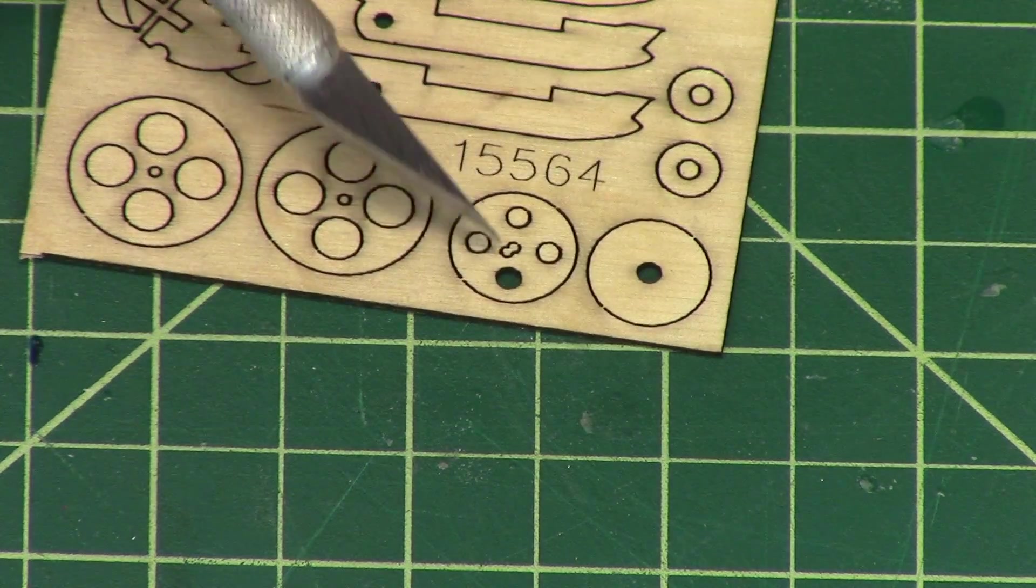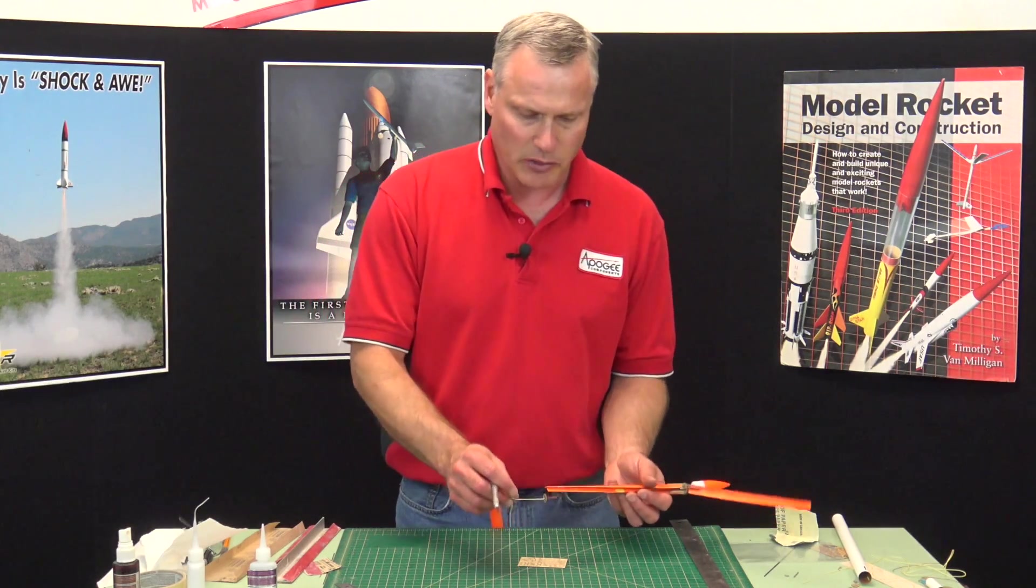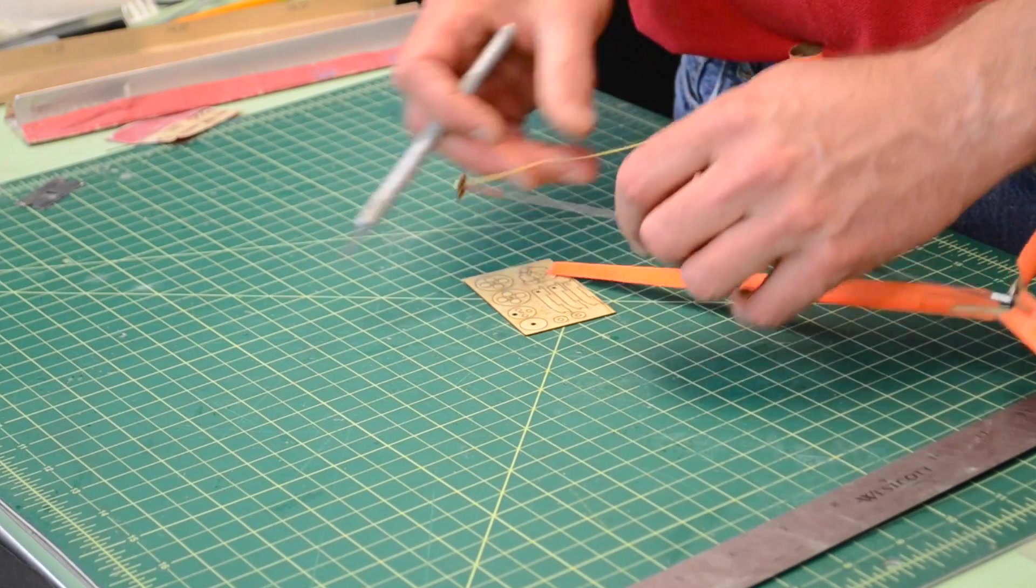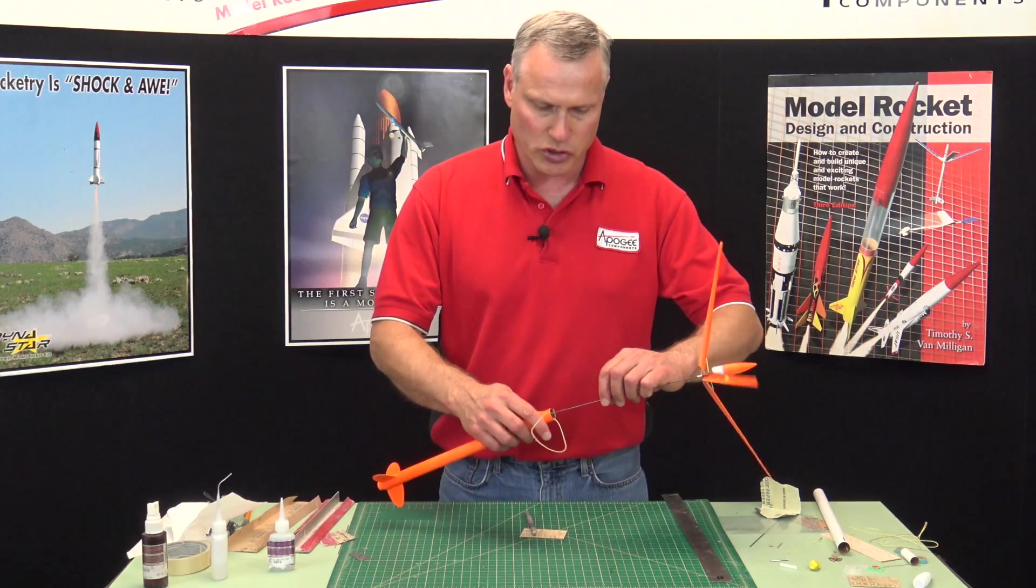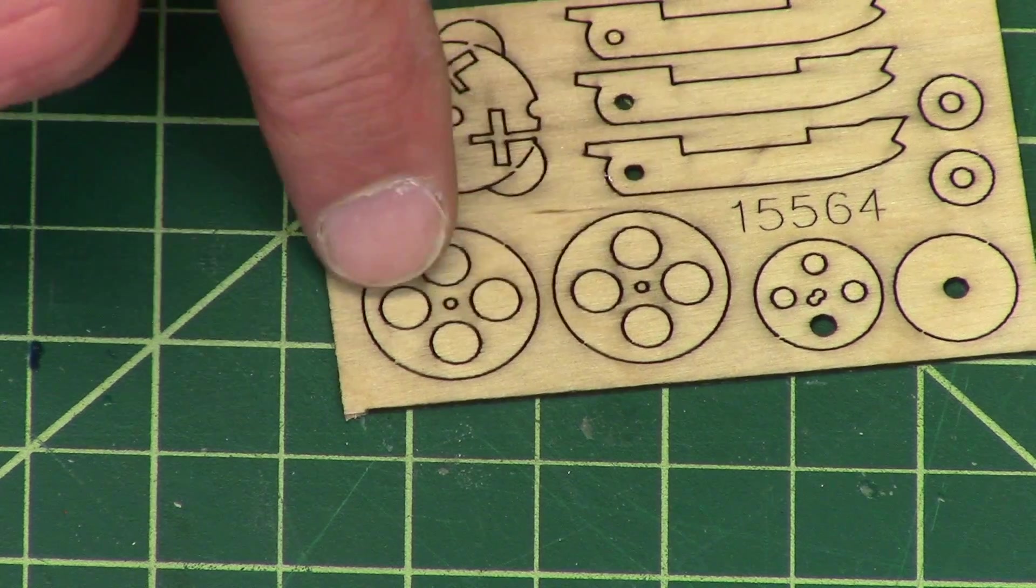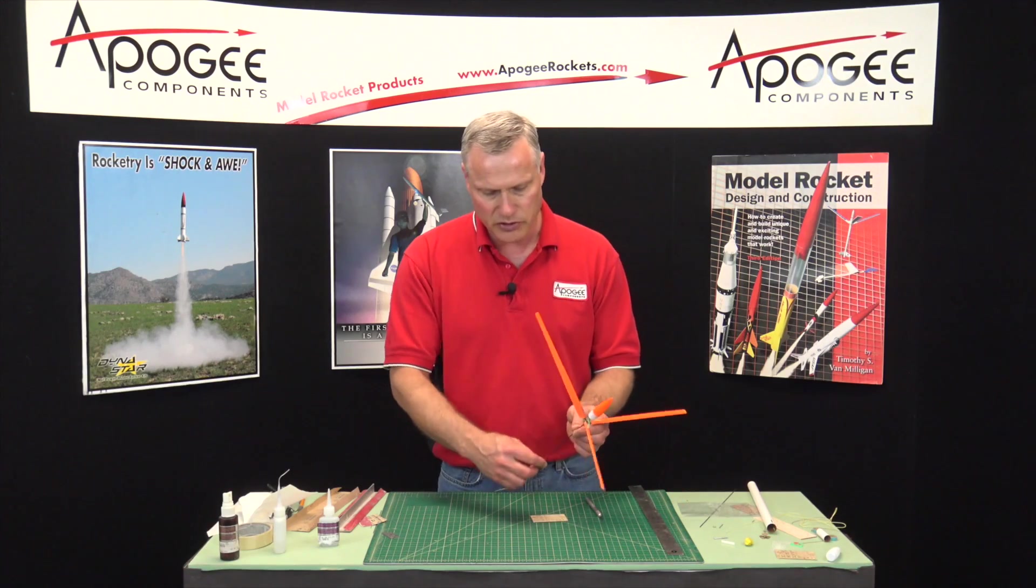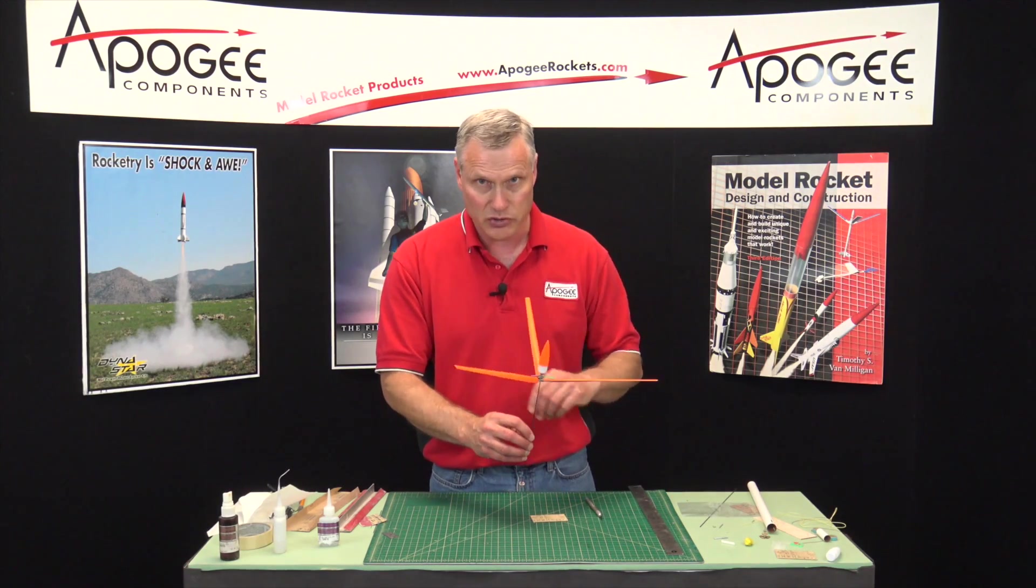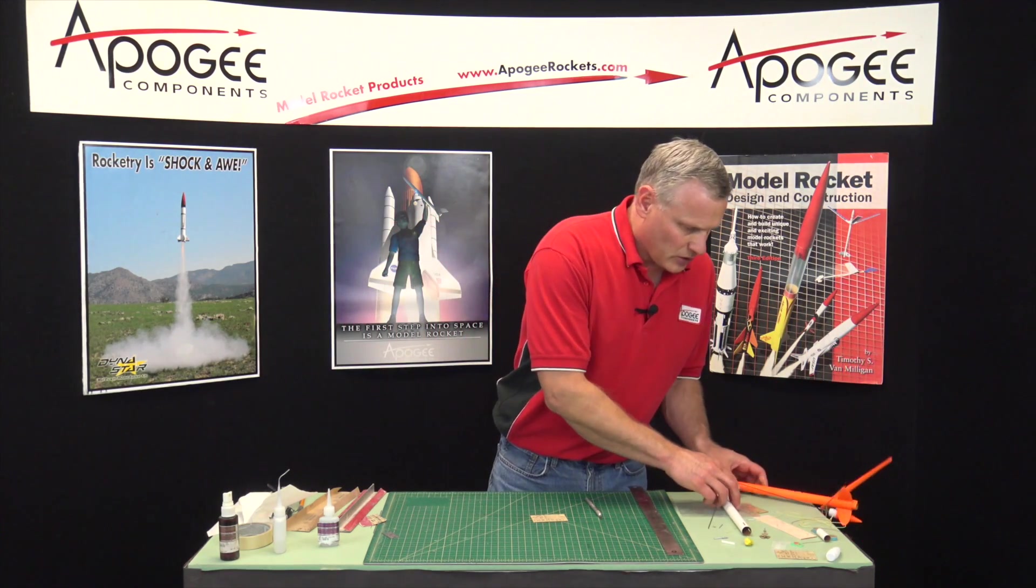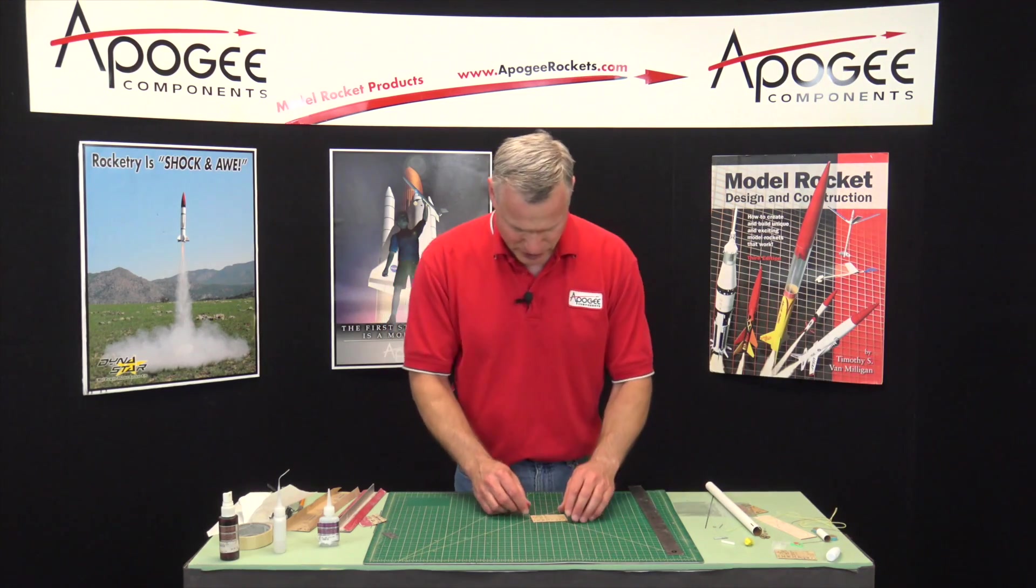This piece with the four holes and the two little holes here in the center goes on the base of the graphite shaft and acts as a little plunger to push all the shock cord into the rocket. And then finally these other big discs go inside the nose cone and center up the shaft inside the nose cone so everything is nice and concentric.